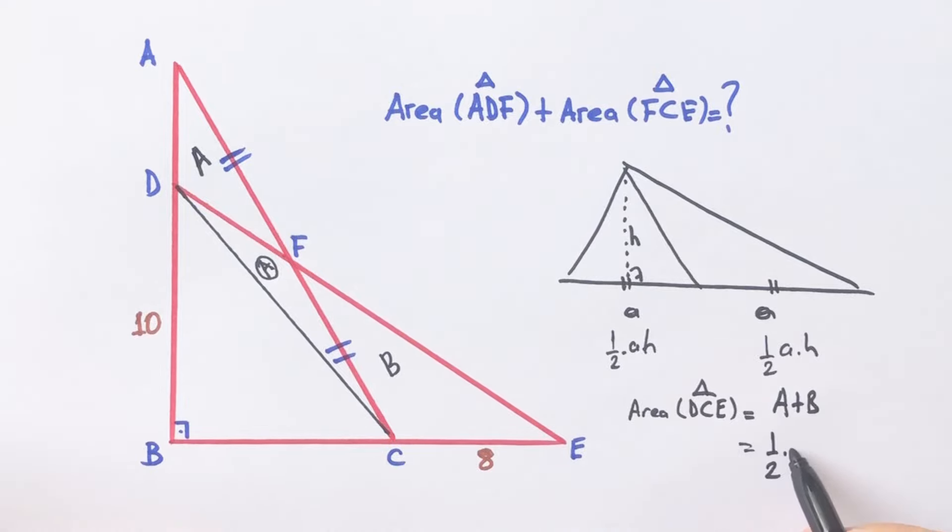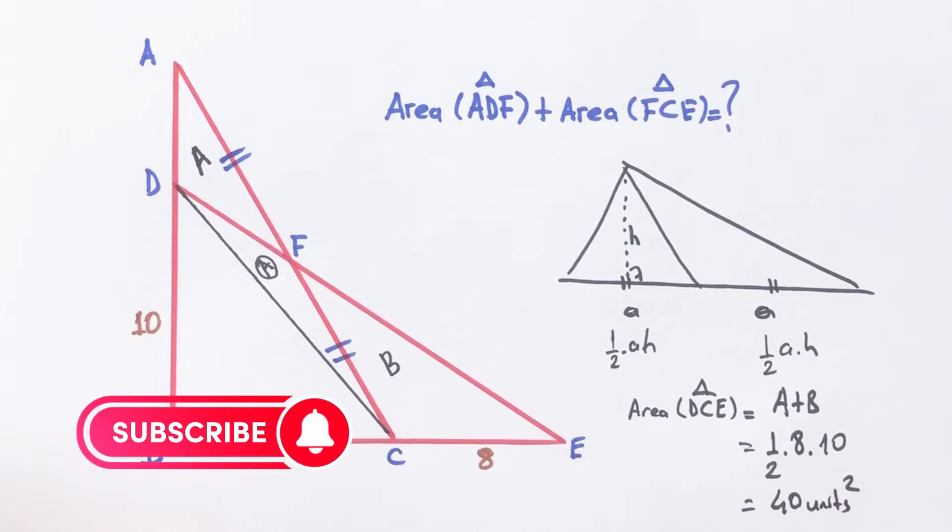So this triangle area equals half of the base and height. Therefore, sum of the area equals 40 units. Thanks for watching, and if you want more videos like this, please subscribe my channel.